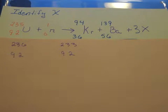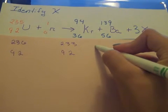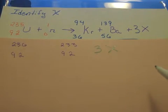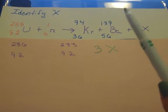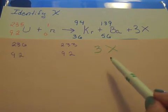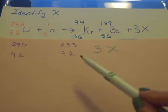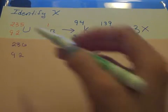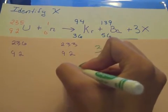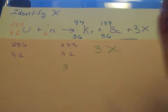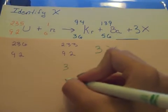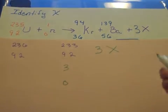Now we want to figure out what we need on the right to get balanced with the left. So now we take into account the 3x that we have here. X is the element that we want to identify, but first we need to balance it out to figure out what the atomic number and what the mass number is of this element. So 236 minus 233 is 3, so we're missing 3 on top. And then 92 and 92, well that's already balanced so we're missing none at the bottom.